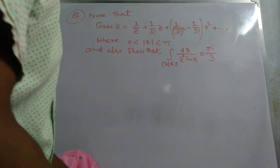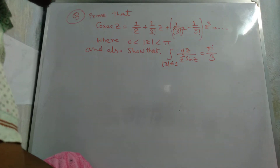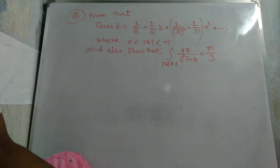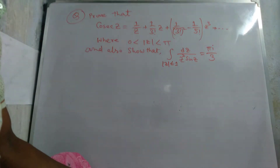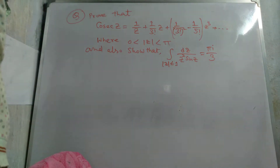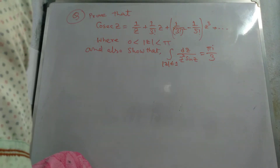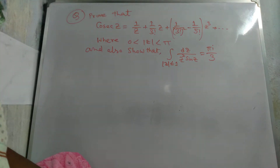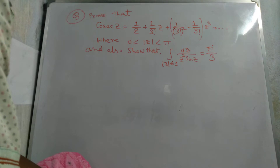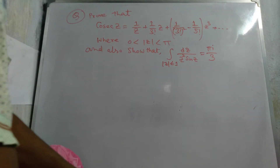Today I start one important question of complex analysis. The question is: prove that cosec z equals 1/z plus 1/(3!) · z plus (1/(3!)² minus 1/(5!)) · z³ plus dot dot dot, valid for 0 < |z| < π. Also show that the integral over |z| ≤ 1 of dz/(z² sin z) equals πi/3. This is a very important question and we solve it now.